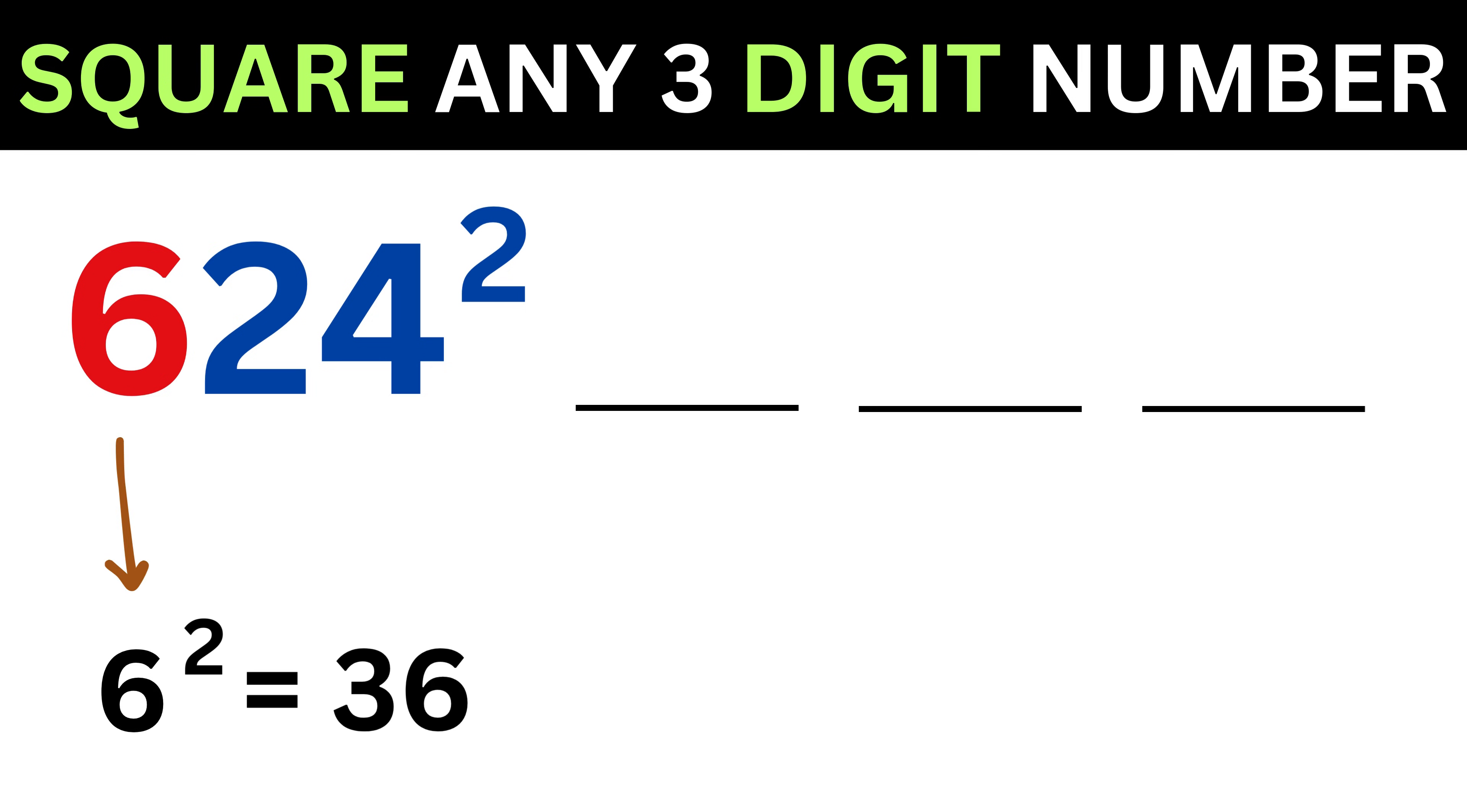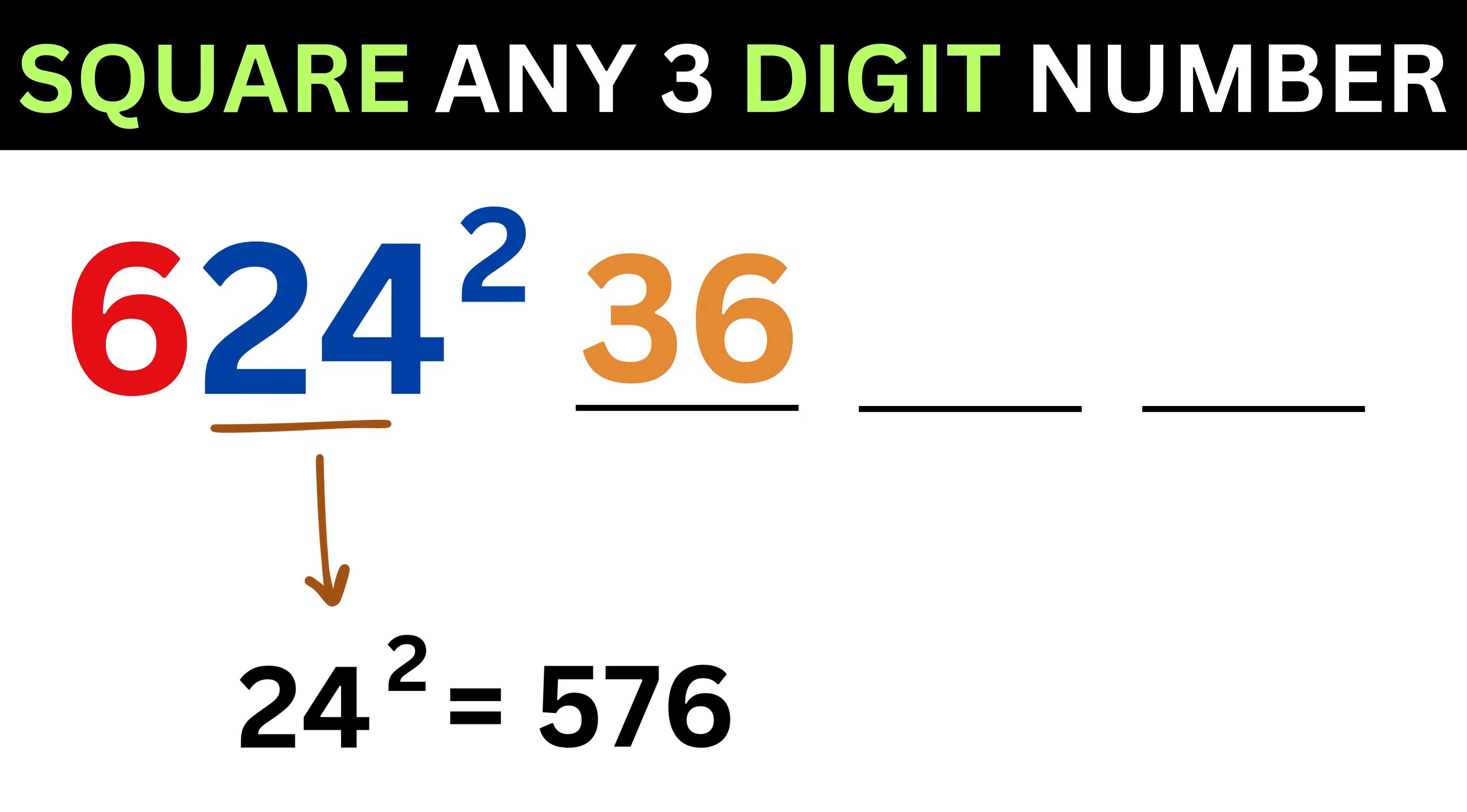Now 6 square is 36, so put it here. Then 24 square is 576. So put 76 here, and carry 5 for the middle part.